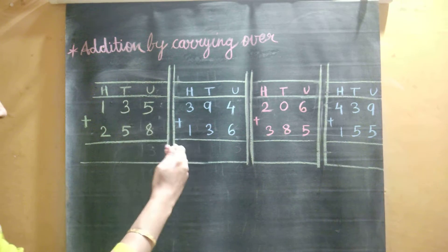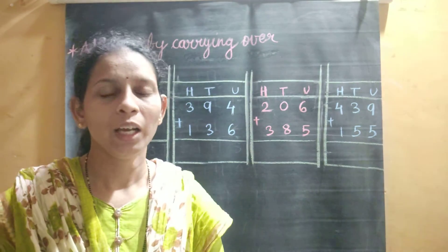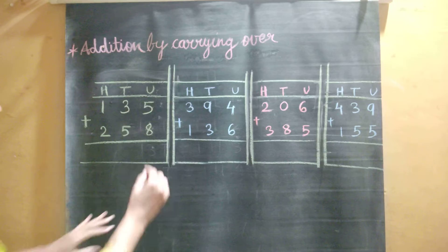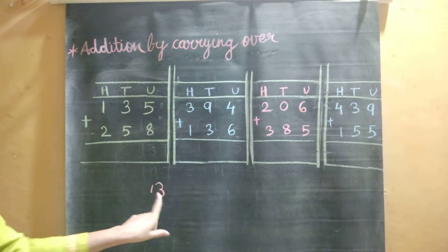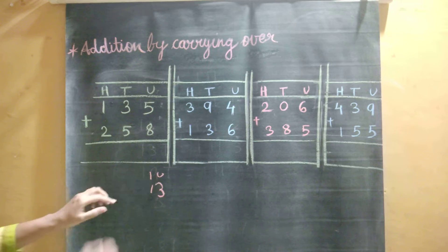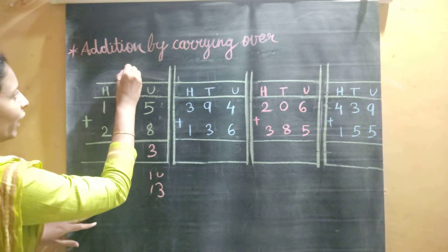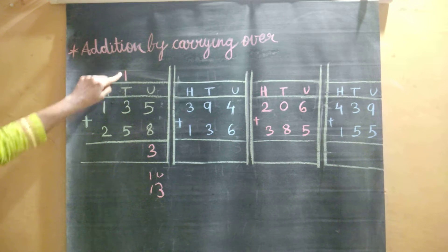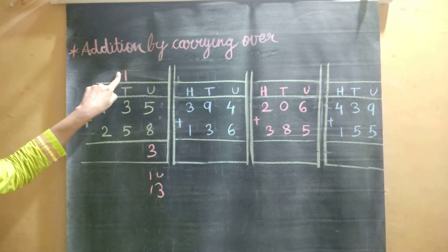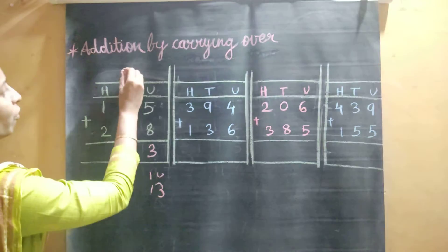Students, you should start from the right-hand side, from the unit place. First is 5 plus 8. So 5 plus 8 is equal to 13. That means here we got the answer 13. 13 means 3 units and 1 ten. So these 3 units we will write here at the unit place, and this 1 ten we will carry over to the tens place. That is called carrying over.